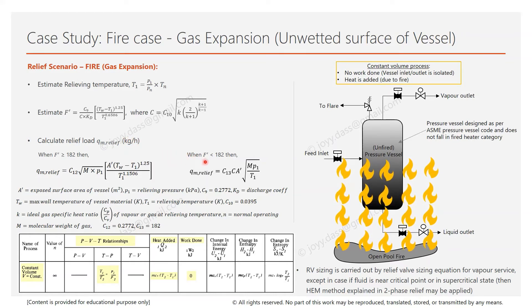If F' is less than 182, then use this formula to estimate the relief load in kg per hour. C12 and C13 are constants. M is the molecular weight of gas. P1 is the relieving pressure. A' is the exposed surface area of the vessel and connected systems, pipings which are exposed to the fire, and all other factors we have discussed earlier.